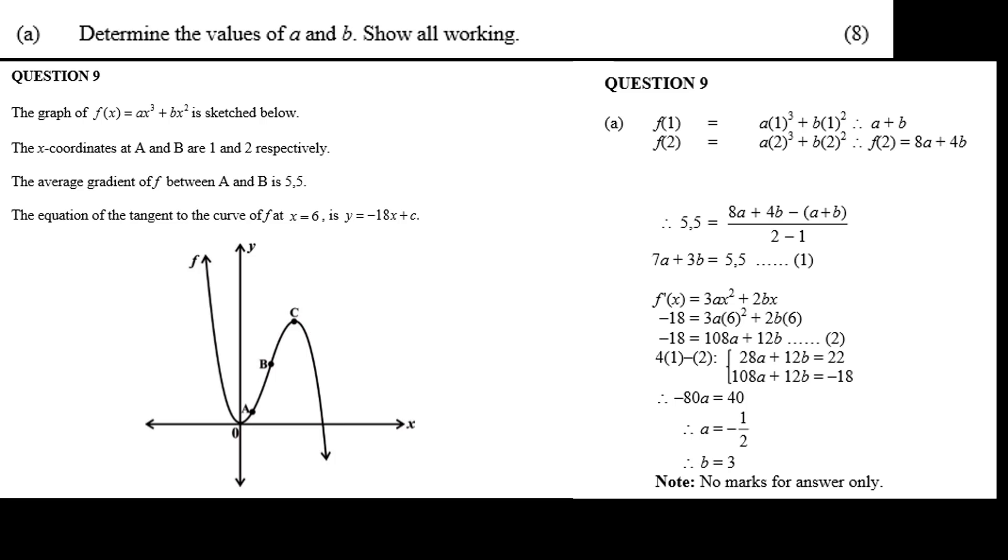Now let's take the first question for 8 marks and determine the values of a and b. For so many marks, make sure you write down all your workings. You can get the answer wrong here and still get 6 out of 8.